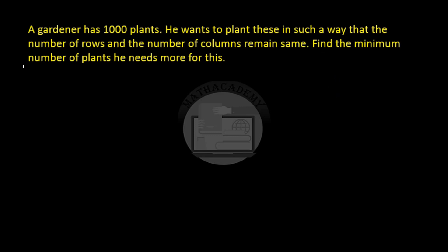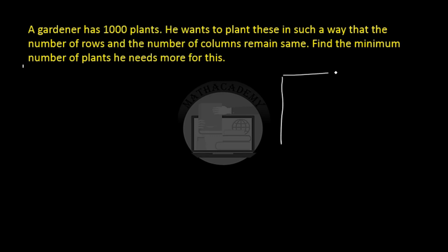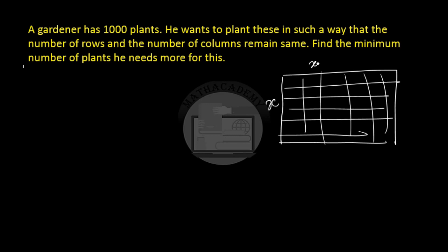So we have number of rows and number of columns as equal. So if there are x rows there are x columns. So the total number of plants which we can put here is x squared. And how many plants are we having? We are having 1000 plants. 1000 is not a perfect square number.